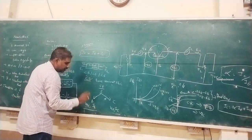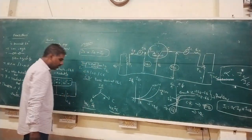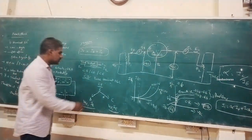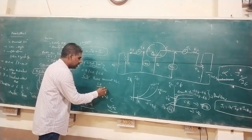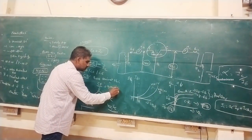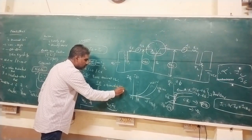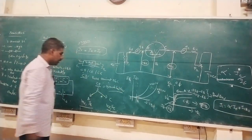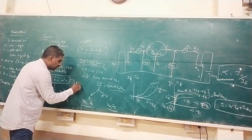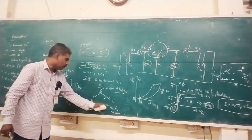VBE and IB are input terminals, while VCE and IC are output terminals. Common emitter is also known as grounded emitter configuration, where the emitter terminal current is zero in the common terminal.